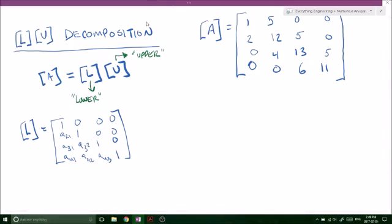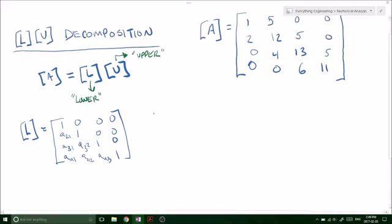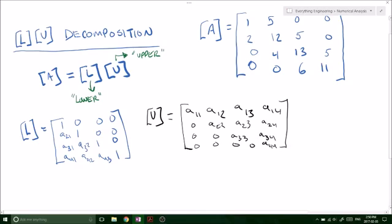So now what is an upper triangular matrix? It's literally just the opposite except for our diagonals are not equal to 1. They are actual values as well. These are the breakdown of our lower triangular matrix and our upper triangular matrix.